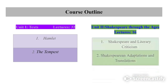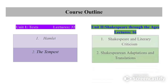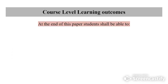The second unit is titled 'Shakespeare through the Ages,' and in this unit we are going to learn firstly about Shakespeare and the literary criticism tradition, and secondly about Shakespearean adaptations and translations. Let's look at the course-level learning outcomes.